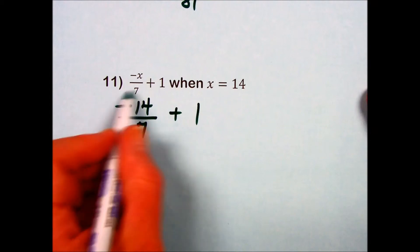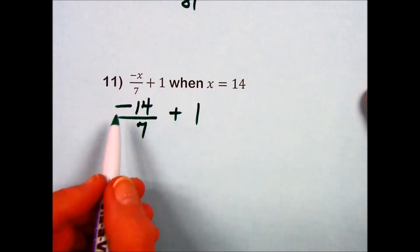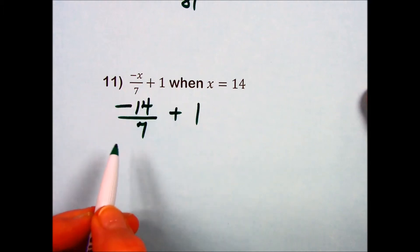Priority as previously indicated, division has the priority. Here we have a signed number. Anytime we have one negative and one positive in division, the result will be a negative. 14 divided by 7 is 2.